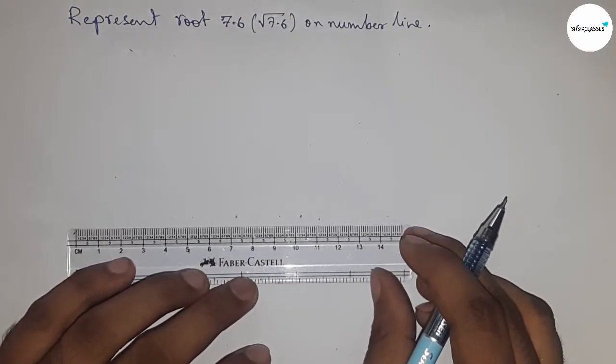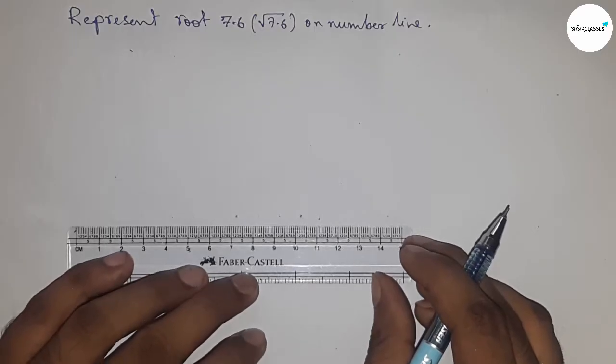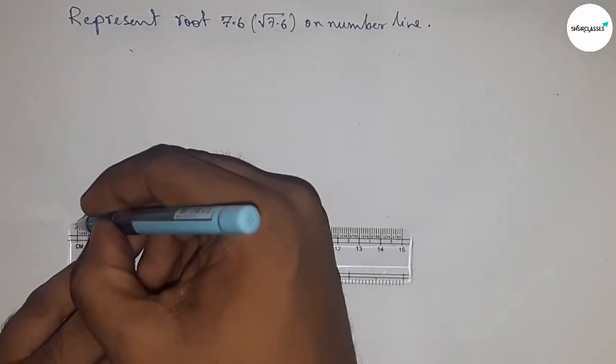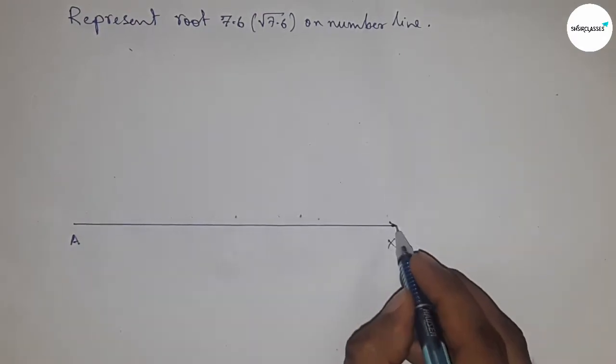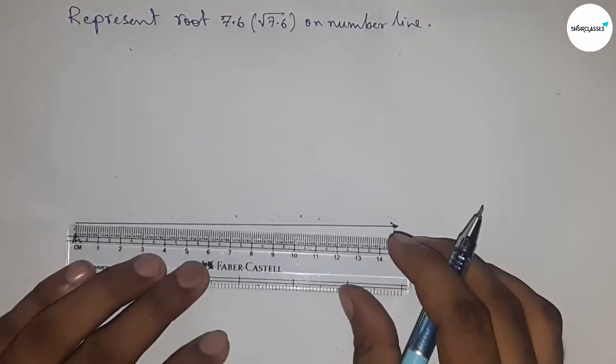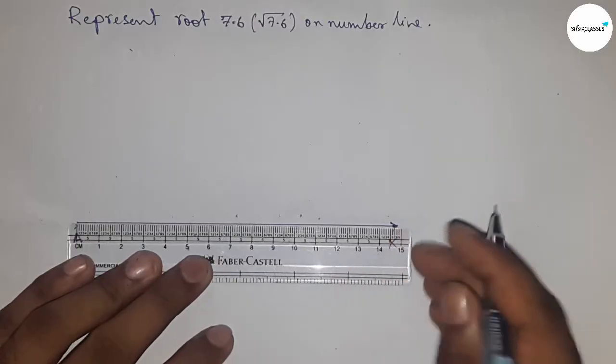First of all, draw a line of any length, and this is the AX line. Next, we're going to draw a length of 7.6 centimeter.